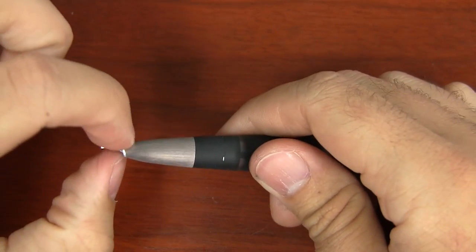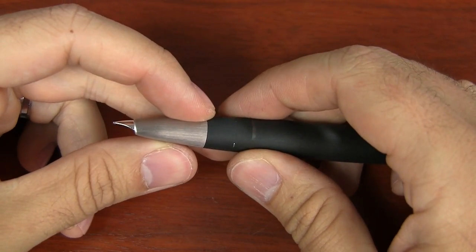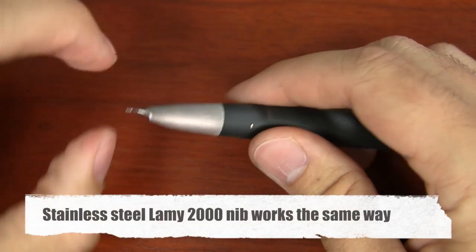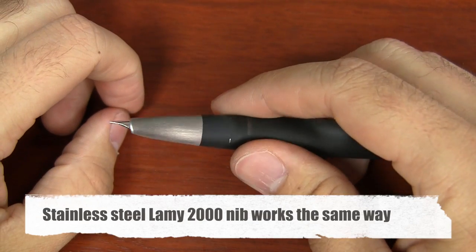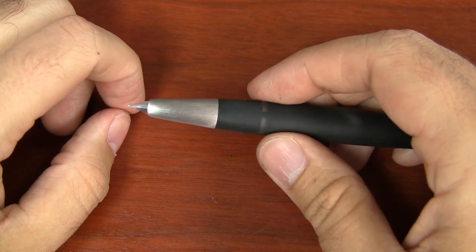Now I will say it's a little tough to get out at first. Once you remove it the first time, it gets a little easier, but if you have to kind of monkey with it and really push on it at first, don't be completely surprised. But at least now you know how to check the nib size on your Lamy 2000.